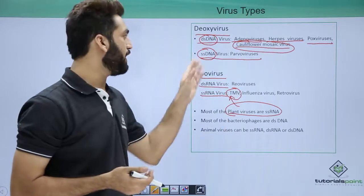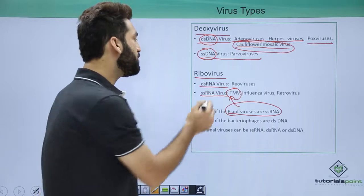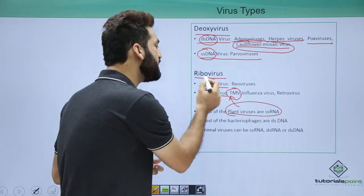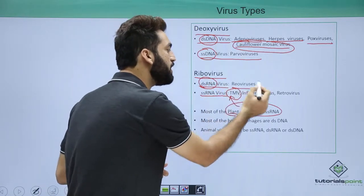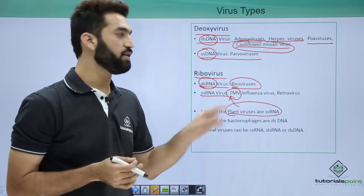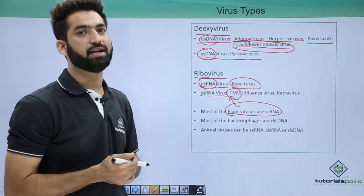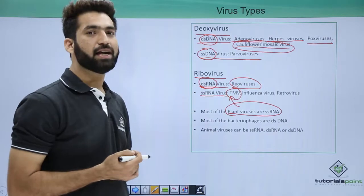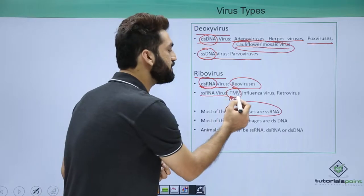When you talk about single-stranded DNA viruses, you have parvovirus — they are single-stranded DNA. When you talk about double-stranded RNA viruses, one important name is Reovirus. So Reoviruses are double-stranded RNA viruses.